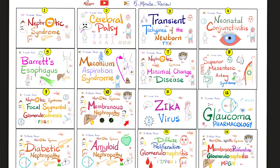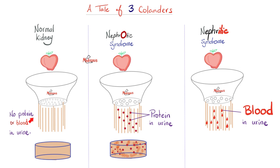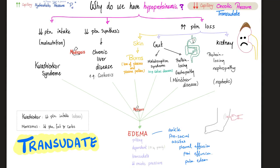This is my 5-minute review playlist — please watch these videos in order, especially the ones about nephrology. A normal kidney should not let protein or blood in the urine. A kidney with nephrotic syndrome will let protein in the urine, called proteinuria. A kidney with nephritic syndrome will let blood in the urine, called hematuria. Nephrotic diseases give high protein in the urine, low protein in the blood, decreasing oncotic pressure, causing edema.